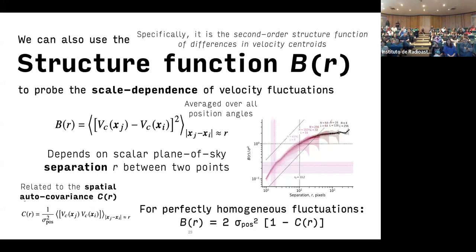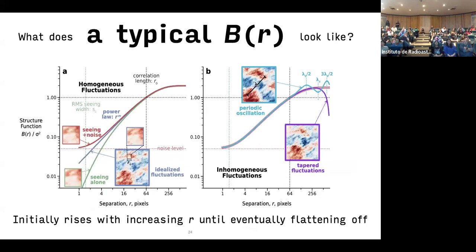Once we have these maps, we can look at how this variation depends on the scale. To do this, we use the second-order structure function of the differences in the velocities, which is a very old tool that's been used to study ionized nebula since Gonover in 1951. The structure function tends to increase with scale.